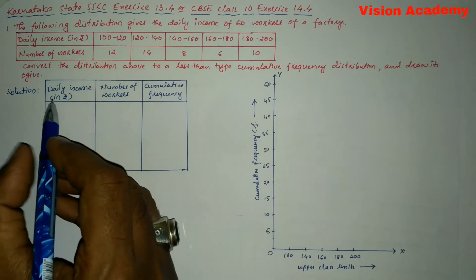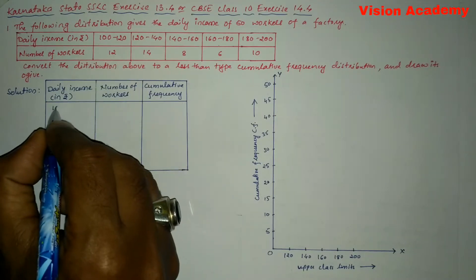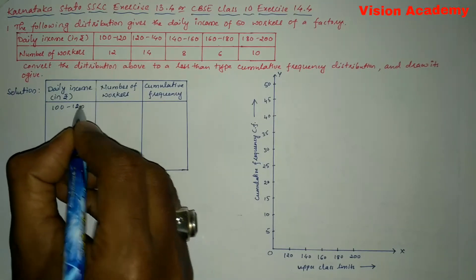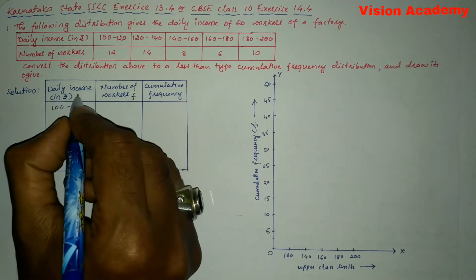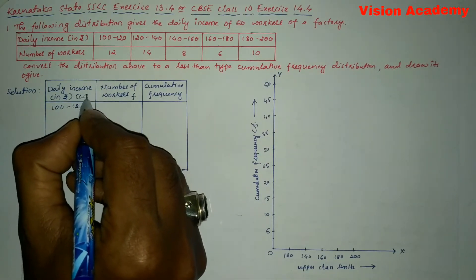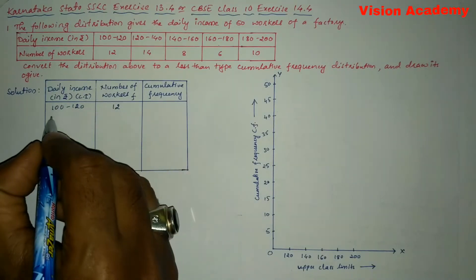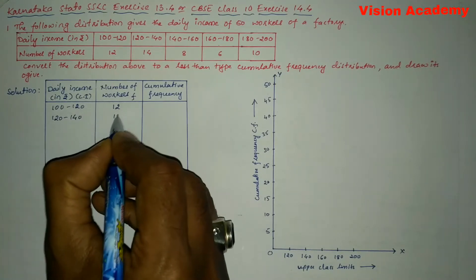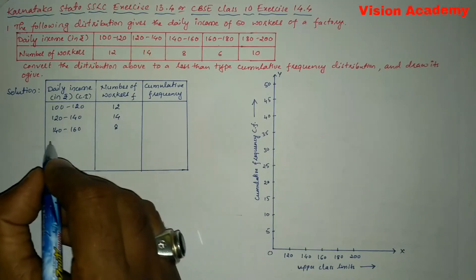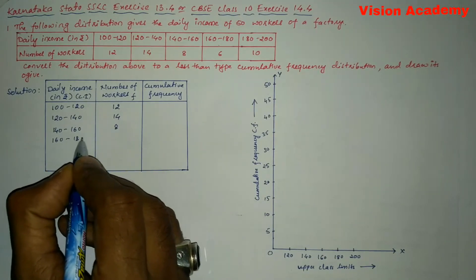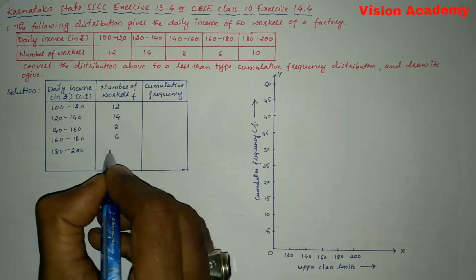Let us find the solution for the given problem. We write the daily income in rupees as the class interval and the number of workers as the frequency. Frequency values are: 100–120 is 12, 120–140 is 14, 140–160 is 8, 160–180 is 6, and 180–200 is 10.